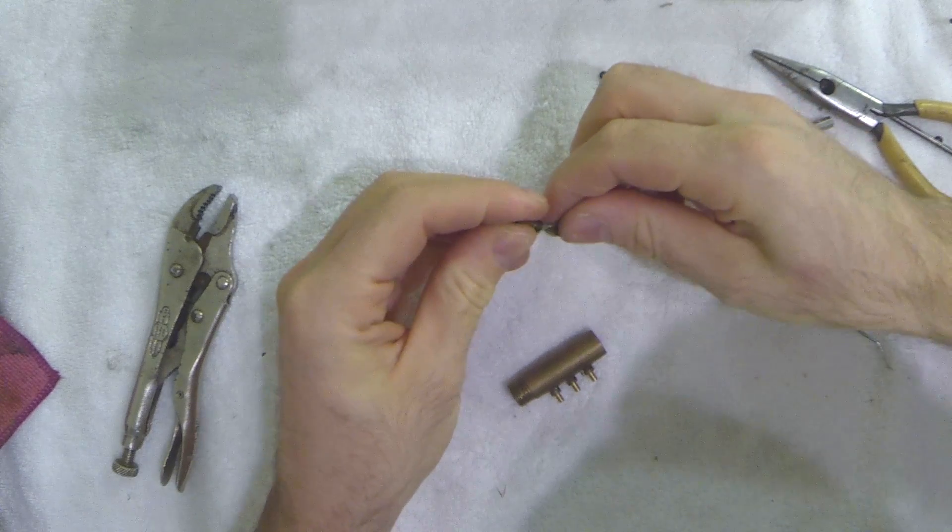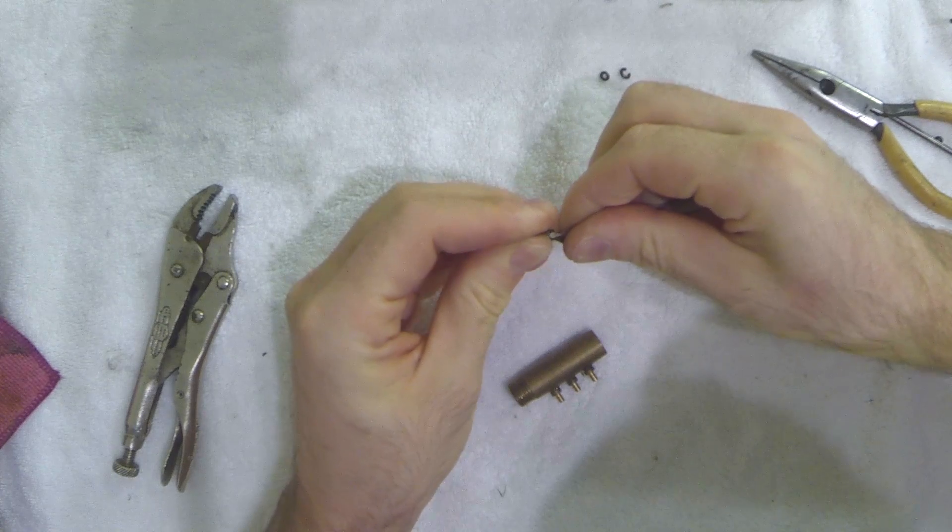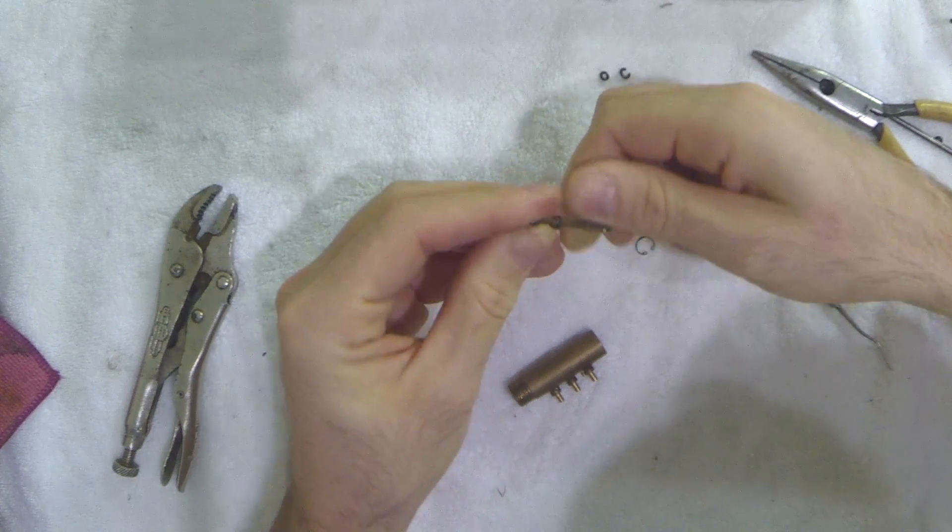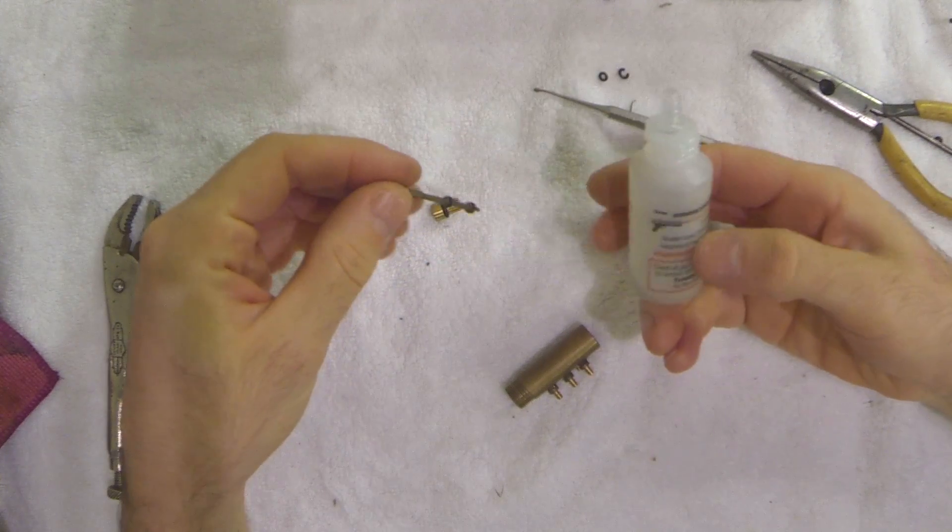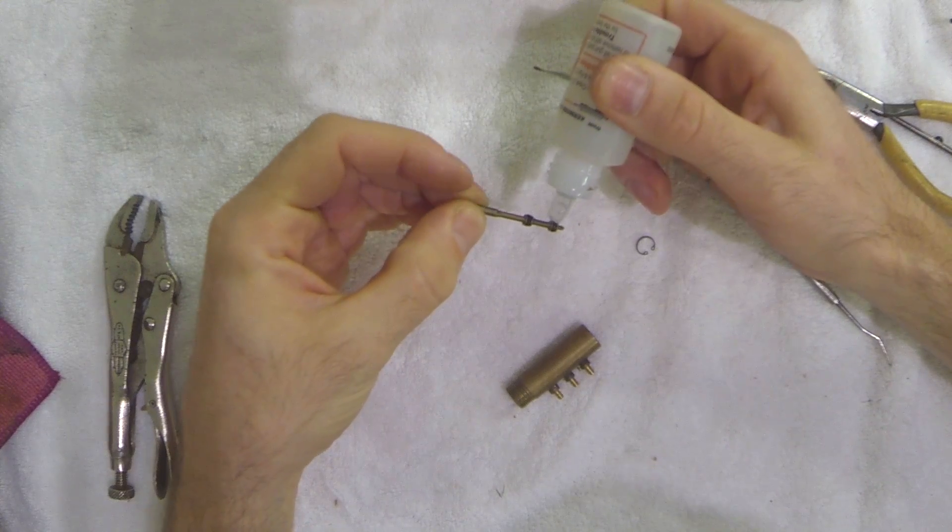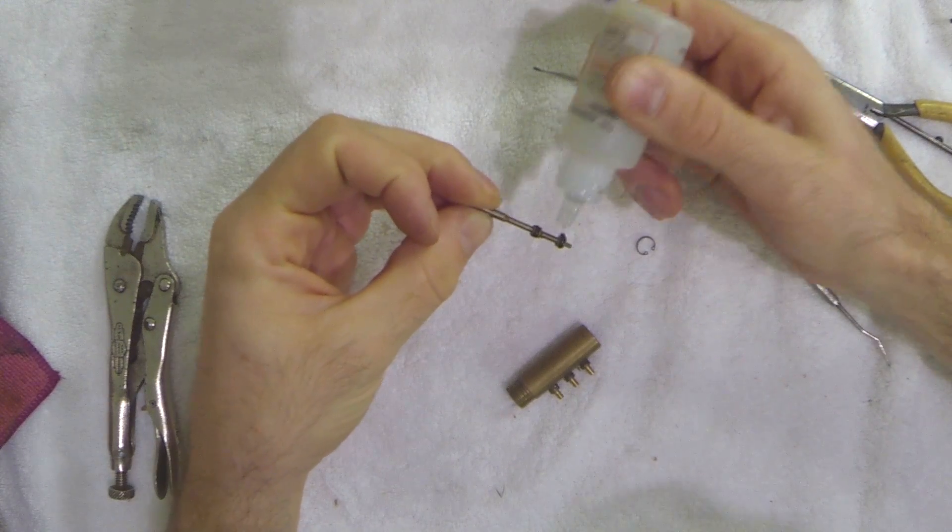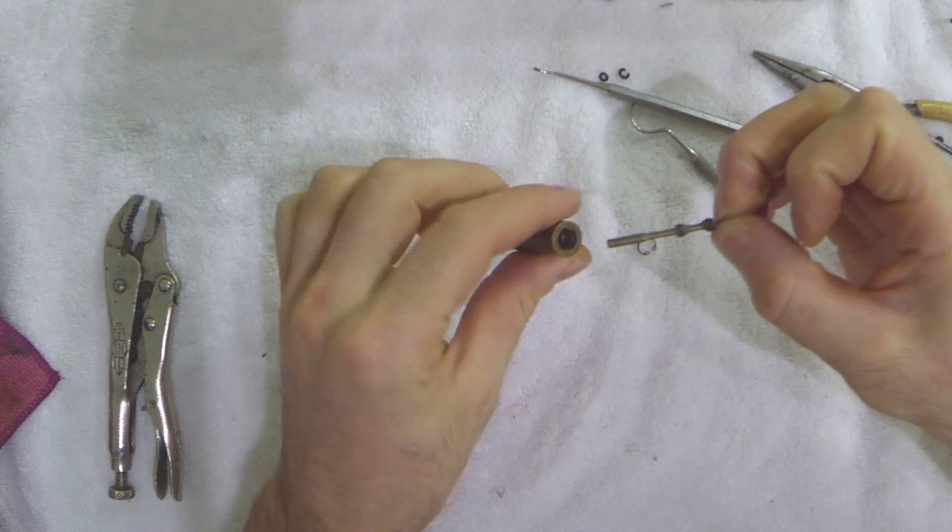I use my needle tool to push it over the back lip. There we go. Now I put a little bit of KC trouble-free oil on there and reassemble the three-way from the front.